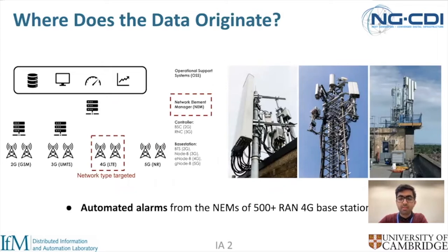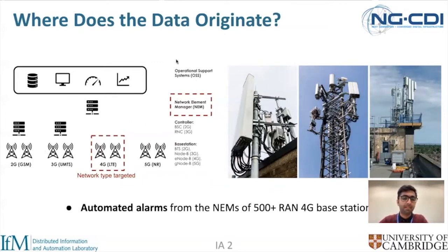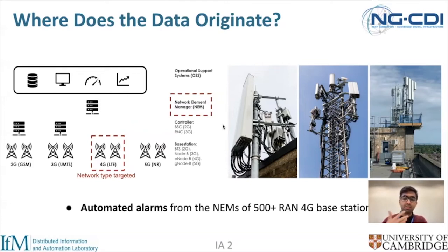This slide shows the schematic diagram of the asset that we are targeting. As you can see, this is the topology of the network that we are targeting. The 4G network type that we are targeting is highlighted in the box, and the alarms that we are working with are extracted from the network element manager. The alarms can belong to one of four categories: warnings, minor, major, and critical. The critical alarms actually correspond to failures, and the goal is to use the minor alarms or warnings to predict the failure alarms.